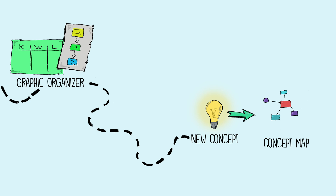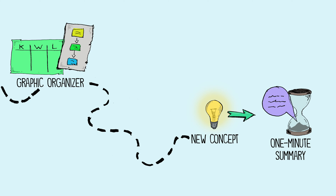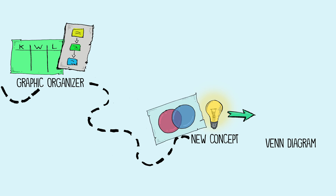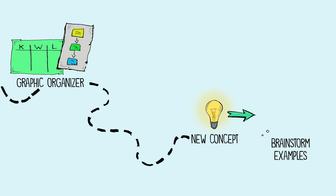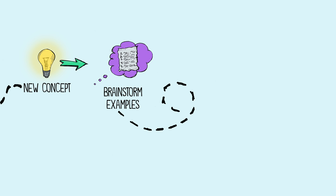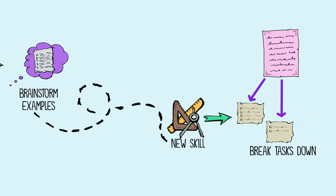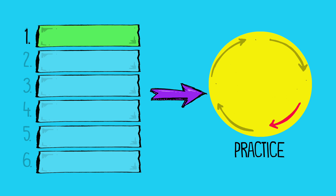Students might pause to fill out a graphic organizer, like a table or a flowchart. When learning a new concept, students could add to a concept map, summarize a key idea in a one-minute summary, complete a Venn diagram, or brainstorm examples of that concept. When learning a new skill, you can break tasks down into parts — students view a step, practice it, then move to the next step and practice that, continuing for all remaining steps.